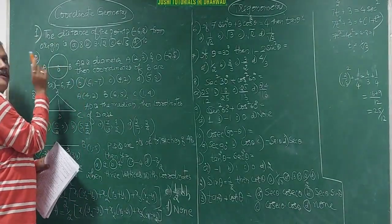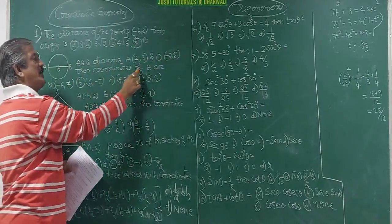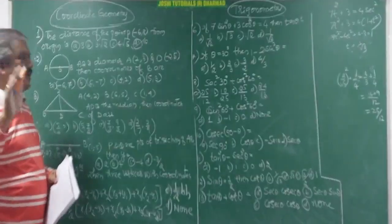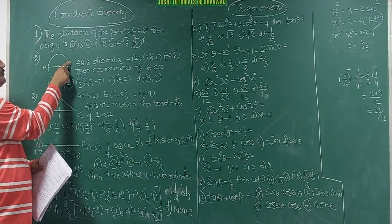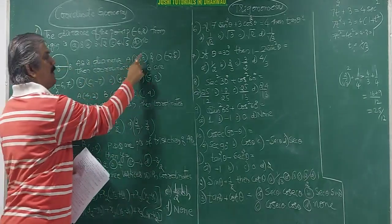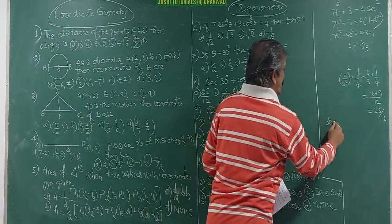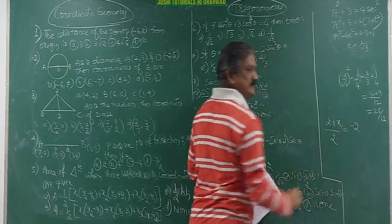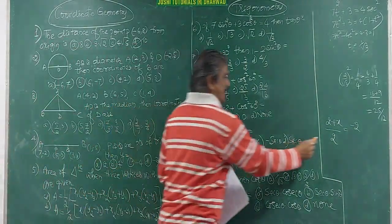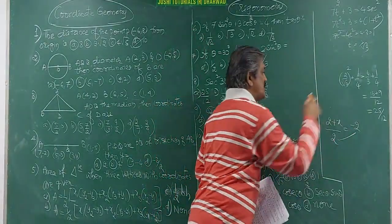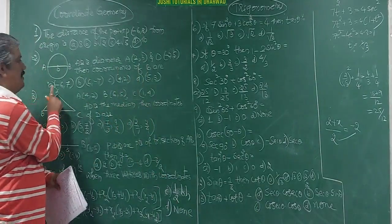If the diameter is given, the midpoint formula must be used. Say A is (2, 3) and O is (2, 5); you need to find coordinates of B. Take (2 + x)/2 = midpoint x-coordinate. Since the midpoint x is −2, that gives 2 + x = −4, so x = −6. The first coordinate is −6.